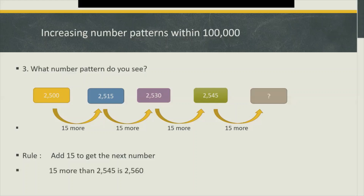So it's going to be 2,545 plus 15, which will give us 2,560. So the missing number is 2,560.